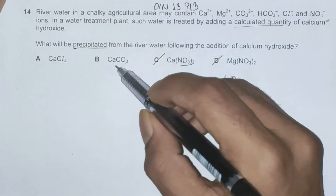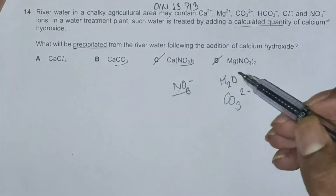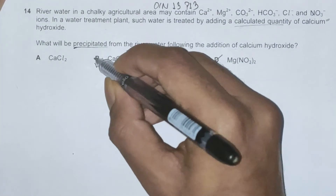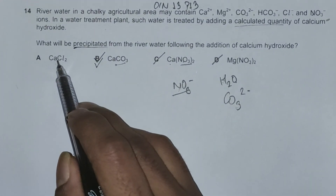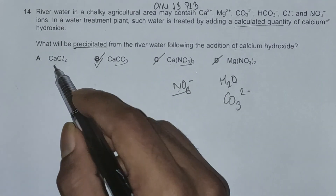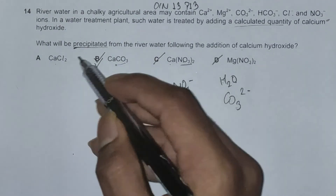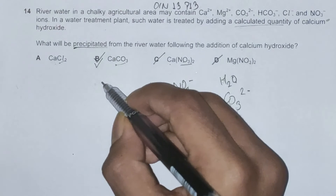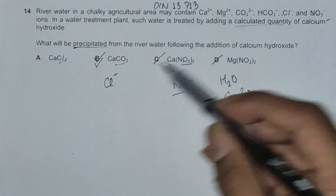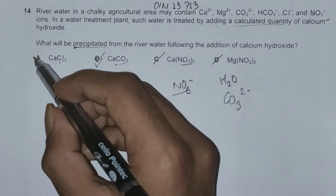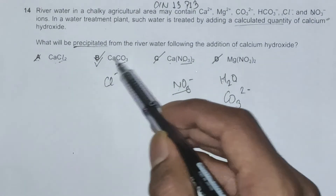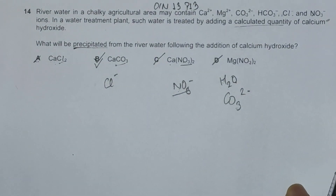Nitrate ions have a single negative charge, so they feel less attraction to cations, meaning CaCO₃ is insoluble in water, so option B should be our correct answer. The same logic used for NO₃⁻ applies to CaCl₂, since Cl⁻ also carries a single negative charge, allowing us to rule out option A as well. Therefore, option B is our correct answer.